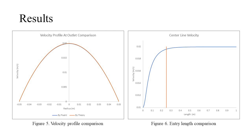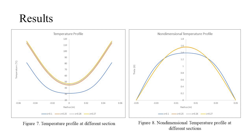After successful post-processing, the results will be as follows. The figure on the left represents the hydrodynamic velocity profile at the outlet in comparison with the theoretical velocity profile. The figure on the right represents the hydrodynamic entry length with respect to the theoretical entry length. The following figures show the variation of the actual temperature profile and the non-dimensionalized temperature profile along the length of the pipe. Figure 8 shows that there is no change in the non-dimensionalized temperature profile after the thermodynamic entry length, meaning the thermal profile is fully developed at 0.25 meters. This means that the flow is fully developed, meaning both the hydrodynamic and thermal profiles are developed after 0.25 meters.